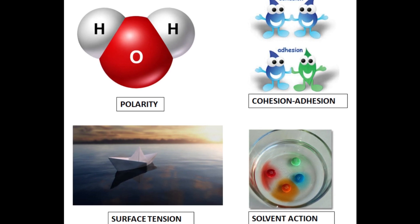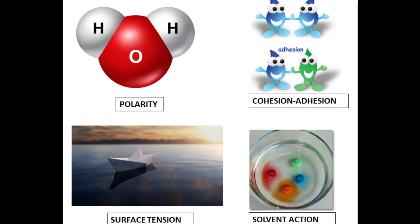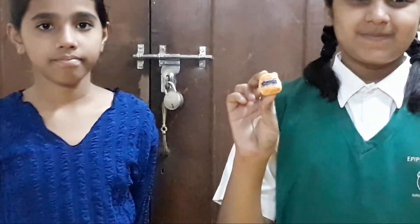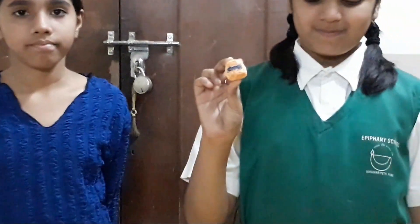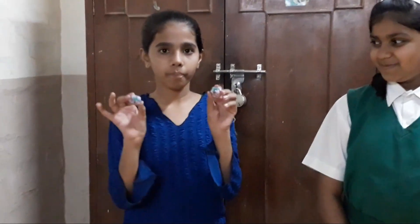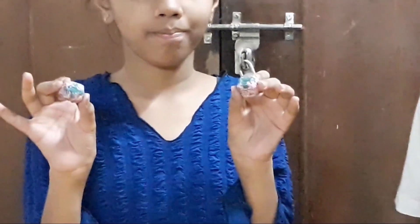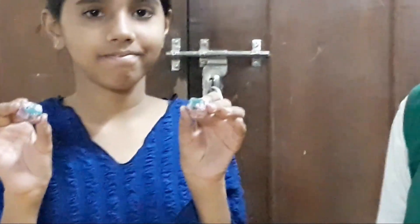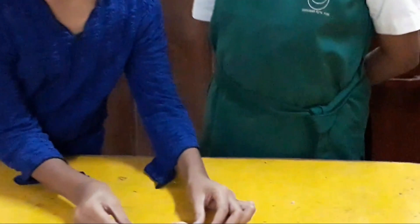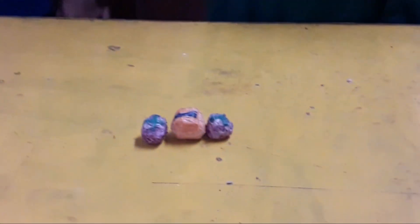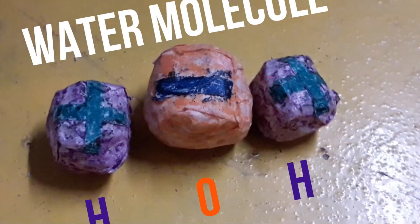The three properties are: polarity, cohesion, adhesion, surface tension, and solvent action. Just like the north and south poles of a magnet attract each other, hydrogen and oxygen attract each other. This happens due to the positive charge on hydrogen and the negative charge on oxygen. This is known as polarity. It is a very important property, as due to this all atoms stick together and the water molecule is formed.